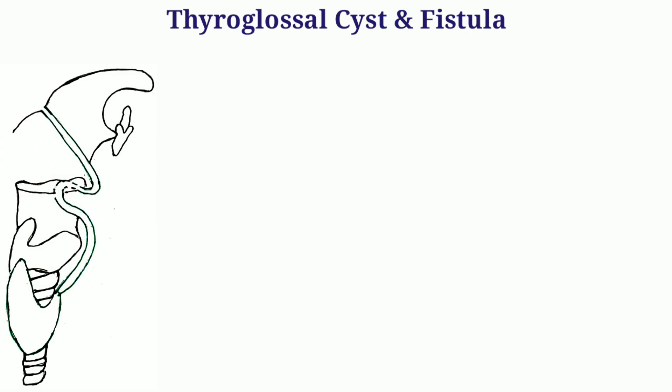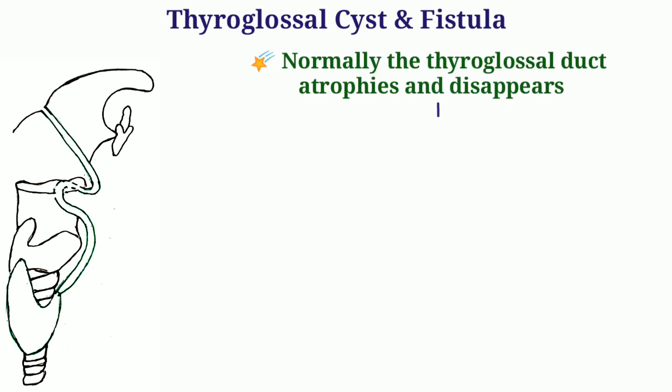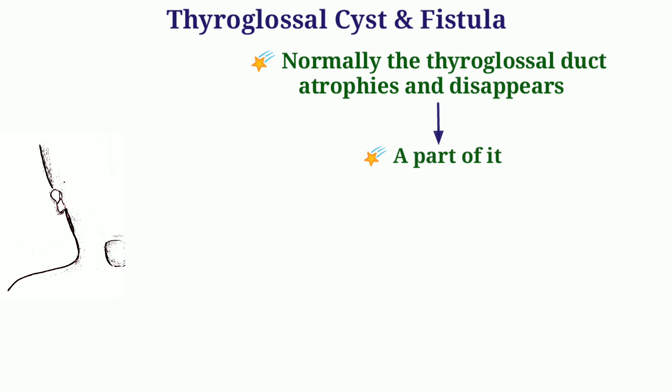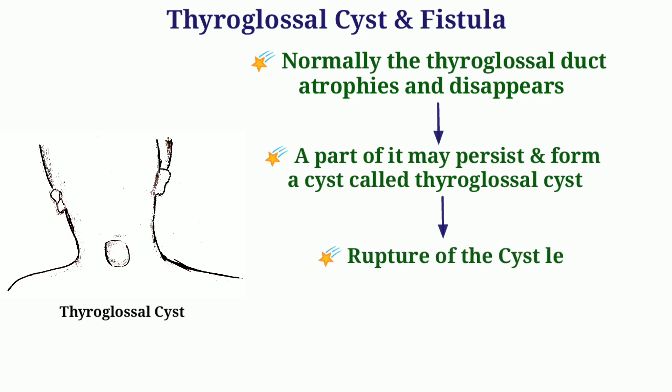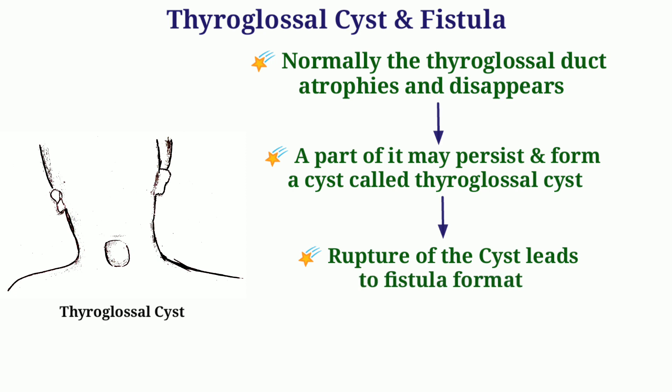Finally, thyroglossal cyst and fistula: the thyroglossal cyst may form anywhere along the course of the thyroglossal duct. Normally, the thyroglossal duct atrophies and disappears, but a part of it may persist and form a cyst — this is called a thyroglossal cyst. If the thyroglossal cyst ruptures, it communicates to the exterior by a secondary opening on the surface of the neck, and it is called a thyroglossal fistula. This topic has been discussed in detail in a separate video — the link is in the description.